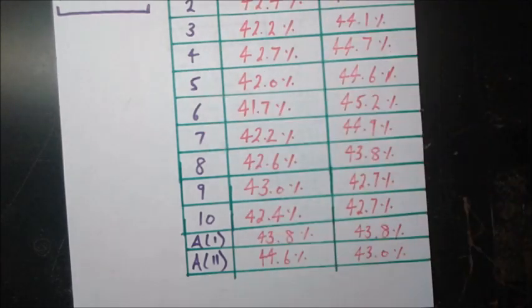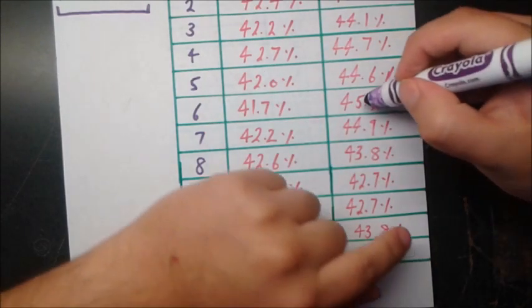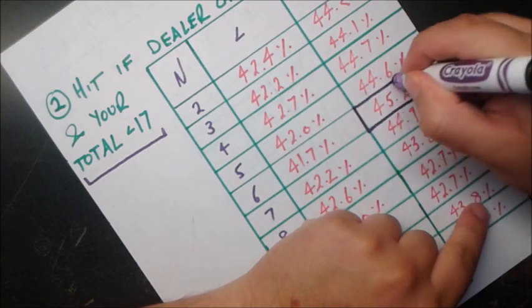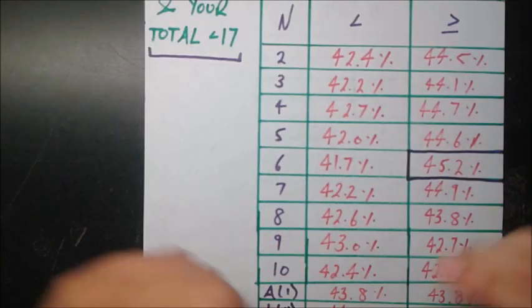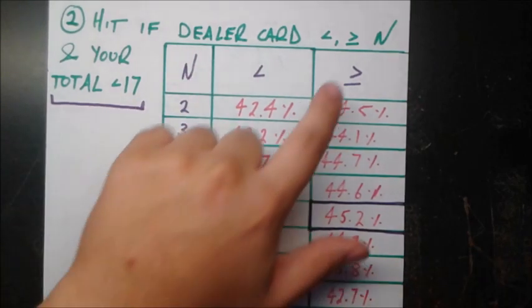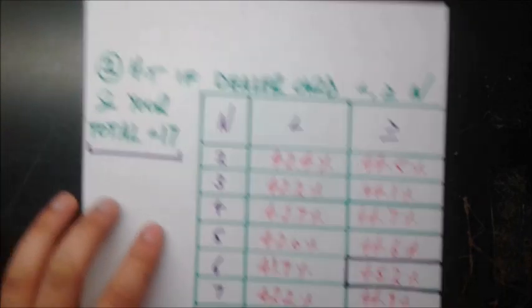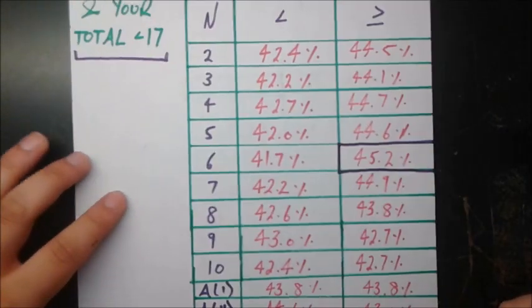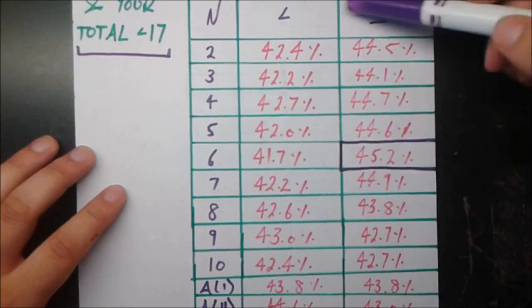But anyway, if we look at all of these numbers together, we see that the highest one is 45.2. So let's put a box around it and then see what that correlates to. So this is correlating to the strategy where n is equal to 6 and it's greater than or equal to, which means that hit if the dealer card is greater than or equal to 6 and your total is less than 17. So that's the winner out of all of these cases here.